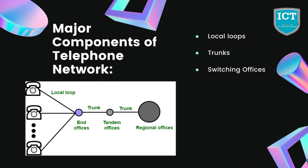There are various levels of switching offices such as end offices, tandem offices, and regional offices. The entire telephone network is shown in the diagram. Now let us talk about local loops. Local loops are the twisted pair cables that are used to connect a subscriber's telephone to the nearest end office or local central office for voice purposes.